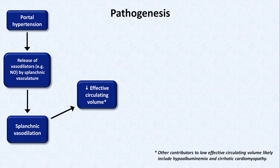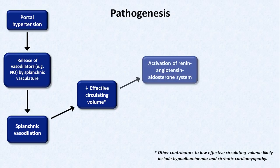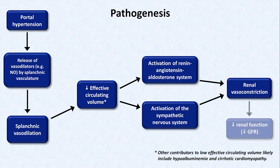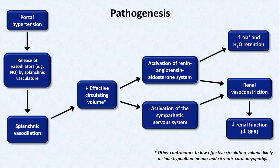Now that effective circulating volume is decreased, this leads to two compensatory responses: activation of the renin-angiotensin-aldosterone system and activation of the sympathetic nervous system. While these help restore systemic blood pressure, they do so at the price of renal vasoconstriction, leading to decreased renal function and GFR. Activation of the renin-angiotensin-aldosterone axis in particular leads to increased sodium and water retention above baseline, which is often noted at the onset of hepatorenal syndrome.